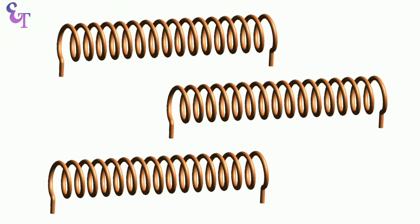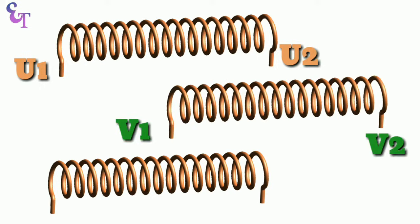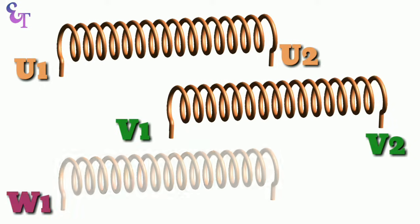There are three windings in three-phase motor. We named these coils of windings like first coil named as U1 and U2, second coil as V1V2, third coil as W1W2.